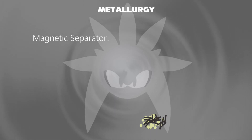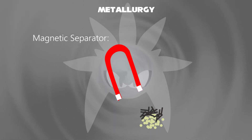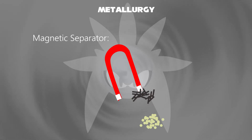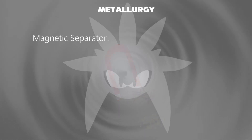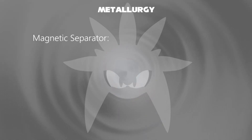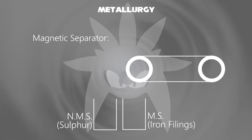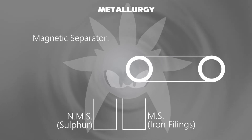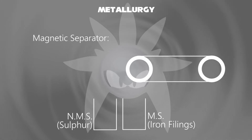In your lab that you've tried, you use a magnet to separate iron filings. Suppose we want to separate iron filings and sulfur. One container has to contain a magnetic substance and the other a non-magnetic substance.